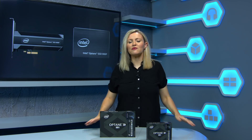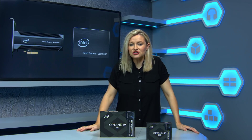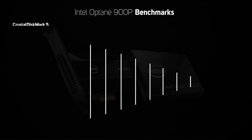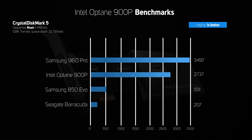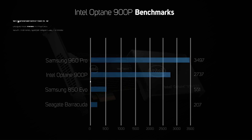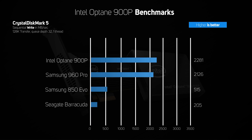The first benchmark we ran was the synthetic storage application CrystalDiskMark. The first two sets of results are run with a transfer size of 128K, queue depth of 32, and single thread, with the 960 Pro posting the best read by far and the 900p the fastest write by a small margin. These results pretty much mirror the marketing specs of each drive, but almost no desktop applications or games operate in this way, so these numbers aren't really indicative of real-world performance.